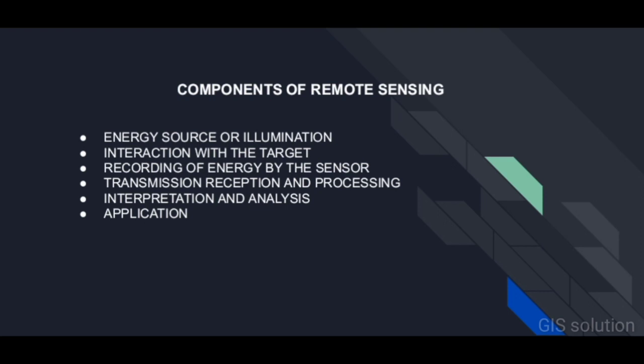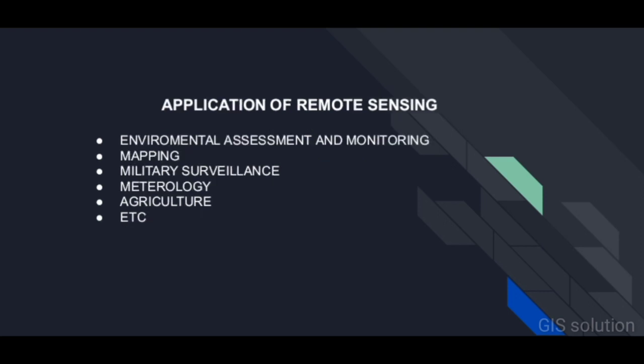The final element is application. The remote sensing process is complete when we apply the information we have been able to extract from the imagery about the target in order to better understand it. Some of the important applications of remote sensing technology include environmental assessment and agriculture, such as crop condition monitoring, yield prediction, and soil erosion measurement.